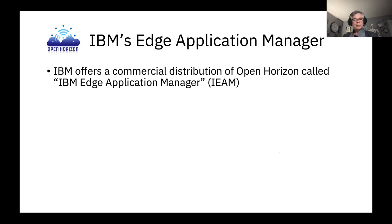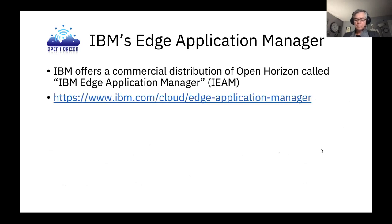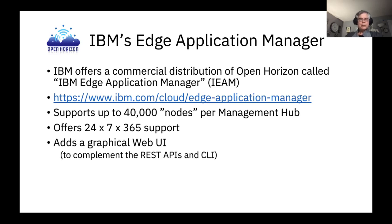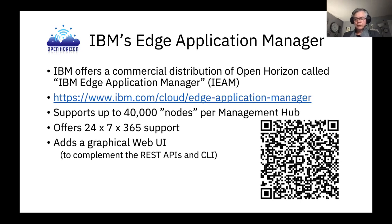IBM pays my salary, so I have to talk about the IBM commercial distribution of OpenHorizon. That's called IBM Edge Application Manager, or IEAM. It supports up to 40,000 nodes per management hub, and a node can either be one of those standalone Linux devices or an entire Kubernetes cluster as a single node. We have 24/7/365 support from IBM, and we also add a graphical web UI to complement the REST APIs and CLI. There's a QR code to hit the IBM commercial distribution version.